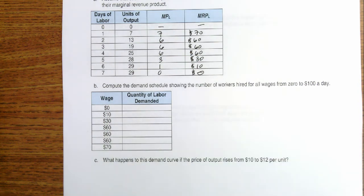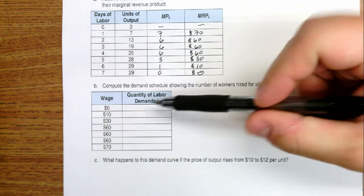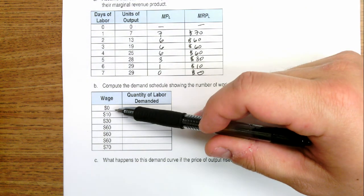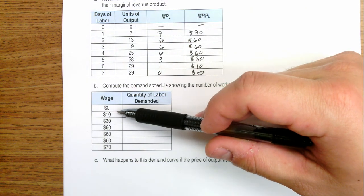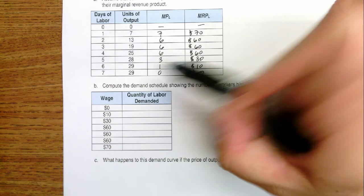So to figure that out, we've got to look at our chart here and say, if the wage rate is zero, then how many people would I hire if the marginal revenue product were also zero? In this case, that would be seven people.